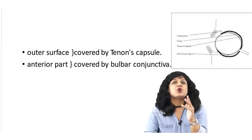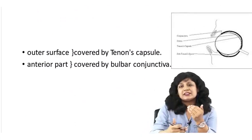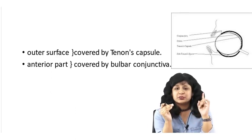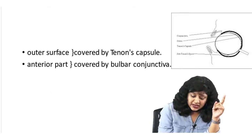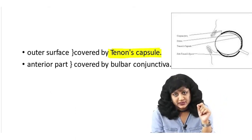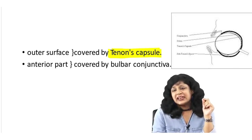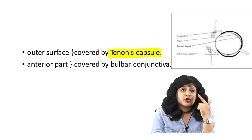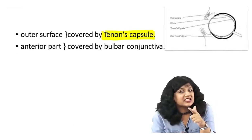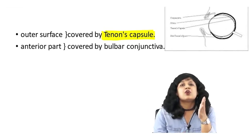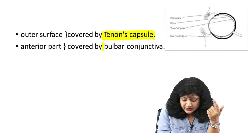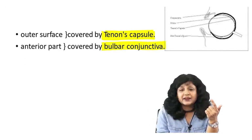The sclera is also covered. If I talk about the outer surface of the sclera in the posterior part, it is covered by a capsule called Tenon's capsule. And the anterior part — the white portion of the eye that is visible — is actually covered by the conjunctiva. So the anterior part of the outer coat, the sclera, is covered by the bulbar conjunctiva.